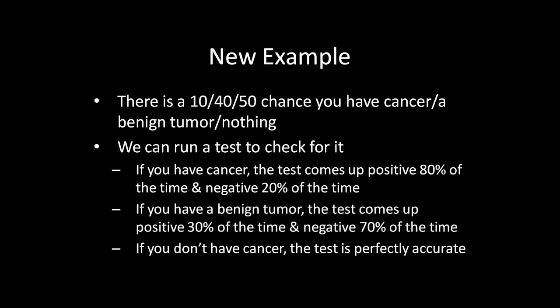We can run a test to check for cancer, but now there's an extra complication: if you don't have cancer, the test might come up positive because of the benign tumor. If you have cancer, the test comes up positive 80% of the time and negative 20%. If you have a benign tumor, the test comes up positive 30% of the time — a false positive — and negative 70%. If you have nothing, the test is perfectly accurate. We still want to know, given a negative screening, whether you have cancer.